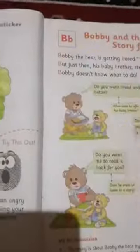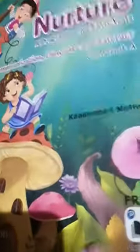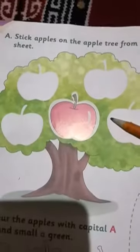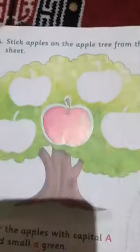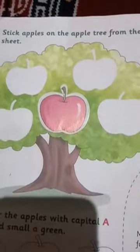Aur iske baad, humare English course book mein kya hai? English course book. Ismen aap page number four pe jao ge. This is your page number four. So, what do you have to do here? Aapko is wale page pe, you have to stick apples, stickers. Stick apples on the apple tree, from the sticker sheet. Aapki book mein pichhe, ek sticker sheet diya ho ga. When you turn to the back of your book, yehaan pe aapko kya diya gya hai? Ek sticker sheet diya gya hai. This is the sticker sheet.